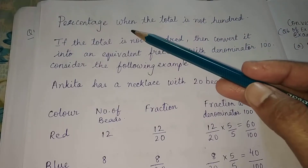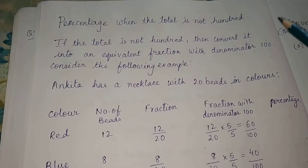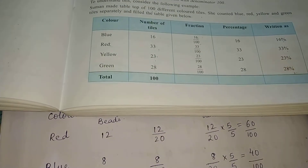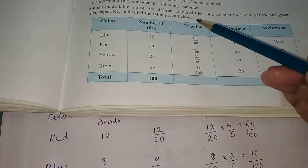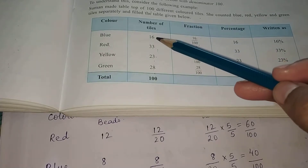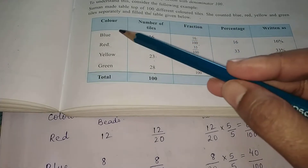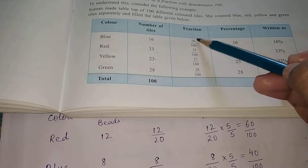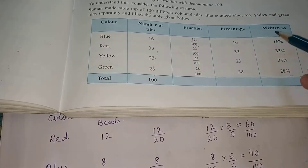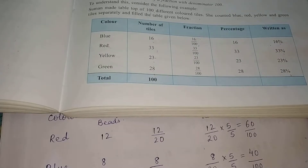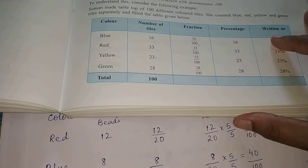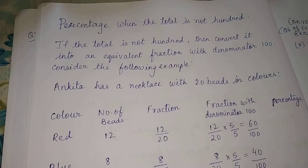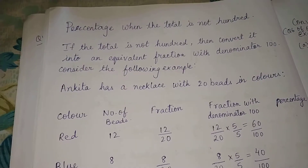Now, how to find a percentage when the total is not 100? Just now we saw an example where the total number of tiles was 100, so it was easy to find. The number of blue tiles was 16, we divided 16 by 100 to get 16%. But if the total is not 100, how are you going to find the percentage? Convert it into an equivalent fraction with denominator 100.